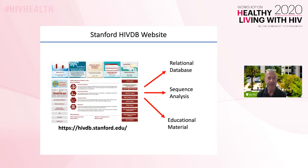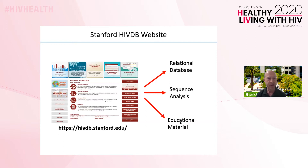The Stanford HIV Drug Resistance Database has three parts: an actual database that can be queried, several sequence analysis programs, and many educational webpages. In this talk, I will describe the most widely used part of the database, the Genotypic Drug Resistance Interpretation Program.